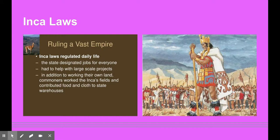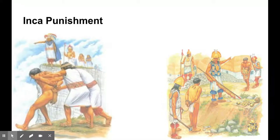The Inca government used many strict laws to keep their people under control. There were laws about what clothes you could wear, what crops you could grow, and many others. The Inca nobles had less strict laws. When the Sapa Inca made a new law, he told the top tax collectors, they told the lower ones, and so on until everyone knew the new rule.